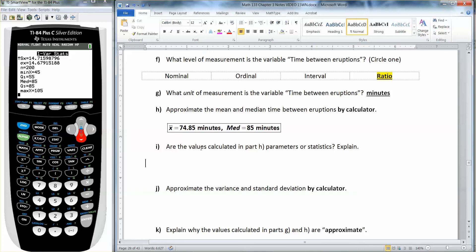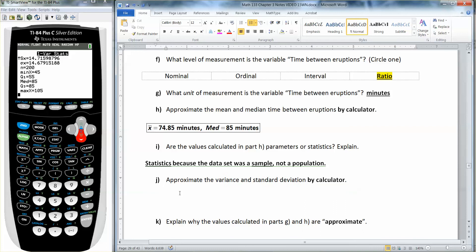Are those values that we found parameters or statistics? Definitely statistics. We didn't have all the eruptions of Old Faithful for all time. That's what it would take to be population parameters. Parameters are when you have the whole population. We do not have that.